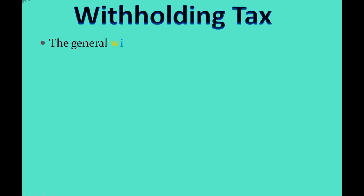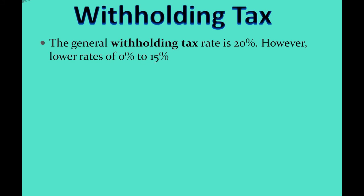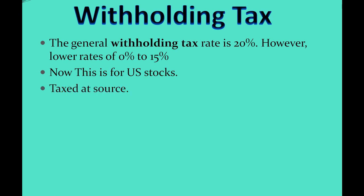Let's have a look at withholding tax. The general withholding tax rate is 20%; however, it can fluctuate between 0% and 15%. This applies to all US stocks and is taxed at source. Unfortunately, there is nothing we can do about that — it's a tax that's set in stone.